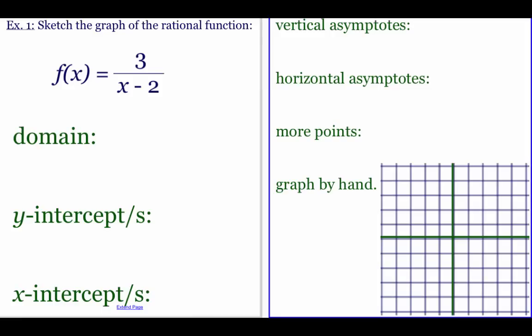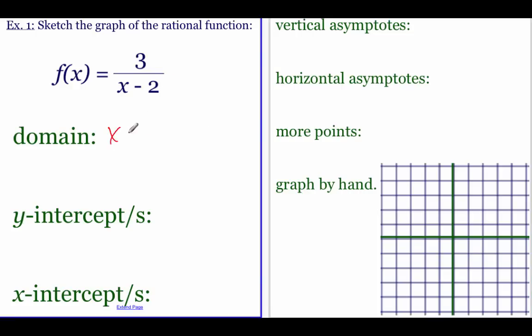Here's the first example: f(x) equals three over x minus two. First, let's look at the domain. The bottom of the fraction can't be zero, so x minus two cannot equal zero, which means x can't be two. Now we're going to jump into all of those steps.